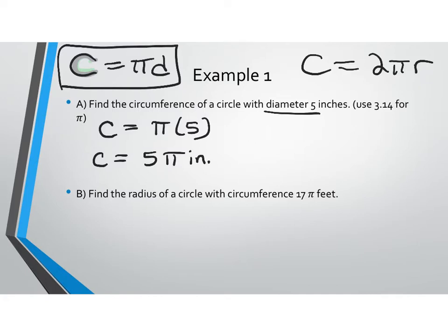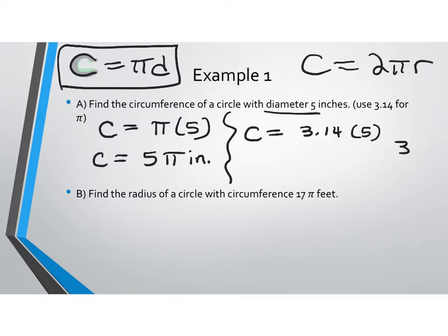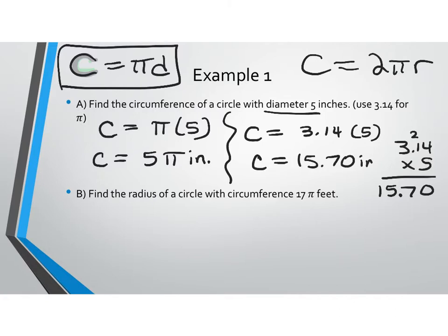Circumference units are always whatever the radius or diameter's units are. If the instructions say use 3.14 for pi, you take C = 3.14 × 5. You'll have to do this by hand: 3.14 times 5 gives two decimal places, so the circumference is 15.70 inches.